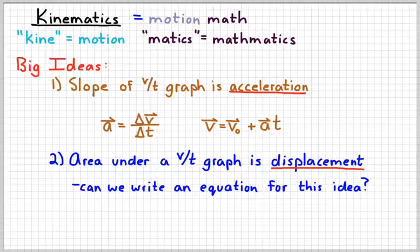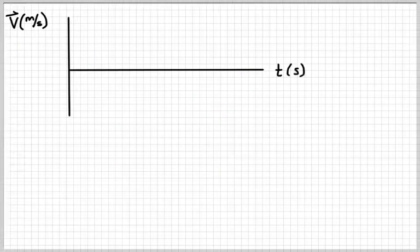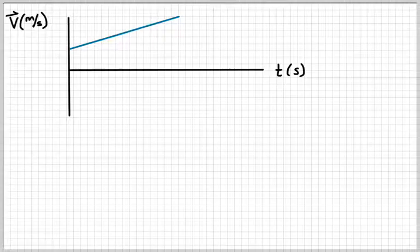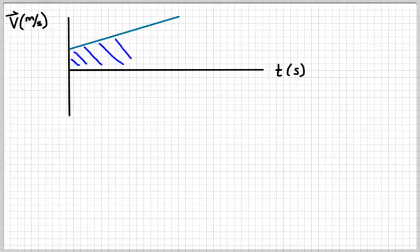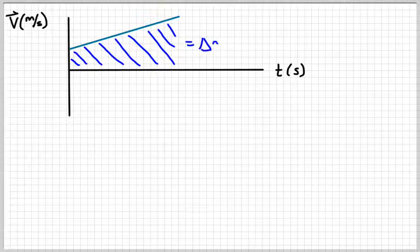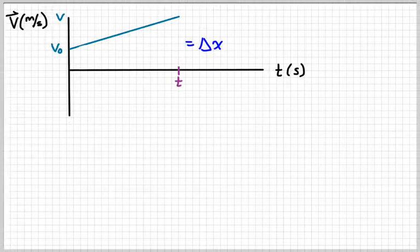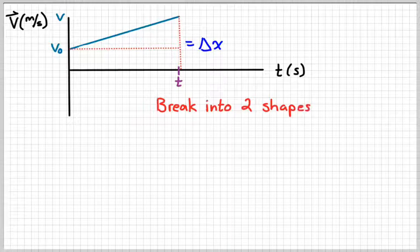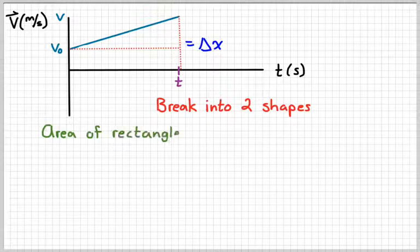So let's sketch a velocity versus time graph. Maybe something that looks like that. We're going to have it not start at zero. That way we get a more general idea of what's going on. The big idea is that the area underneath that graph is equal to our displacement. So what we're going to try to do is write a general equation for the area under that graph. If I put some variables on there, initial velocity, final velocity, and time, then I can break this thing up into two different shapes. There's a rectangle and then there's a triangle.